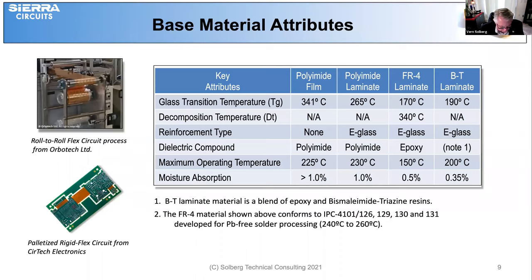It's important to research the various products to choose the one best suited for the design. The attributes of concern are glass transition temperature, decomposition temperature, reinforcement type, dielectric compound, maximum operating temperatures, and moisture absorption. The BT laminate material is a blend of epoxy and bismaleimide triazine resins — it's a very stable material.